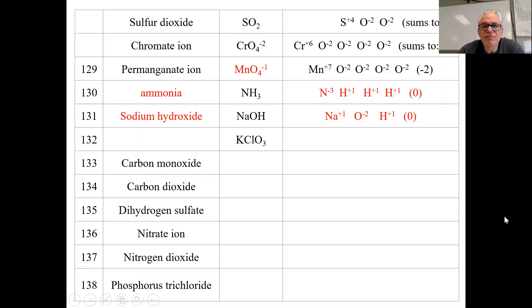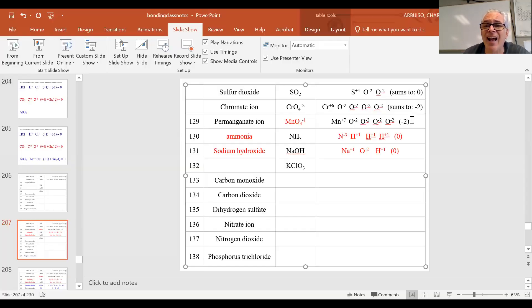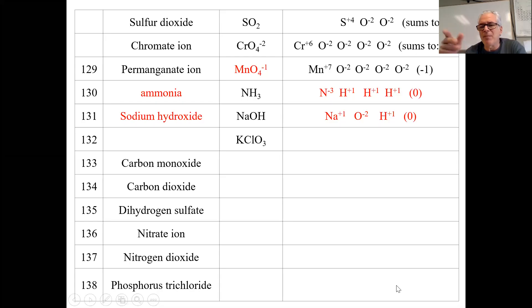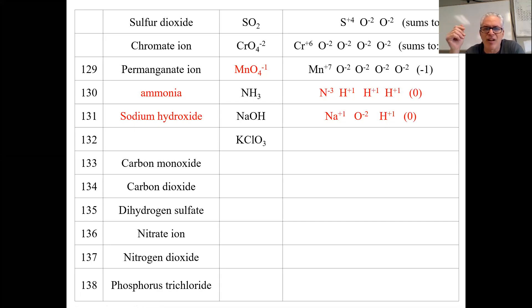Ammonia: nitrogen can be negative three and the three hydrogens positive one each. That sums to zero. There was one little mistake in the slideshow — it was showing a sum of negative one. Who made this slideshow? Sometimes when you try to go fast and copy-paste, you take shortcuts and screw it all up.